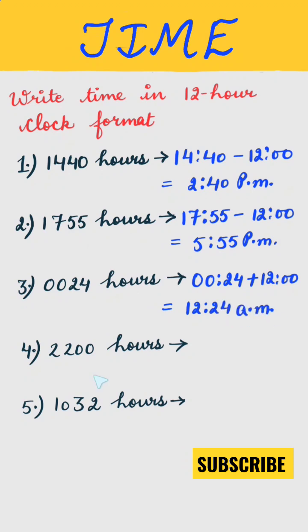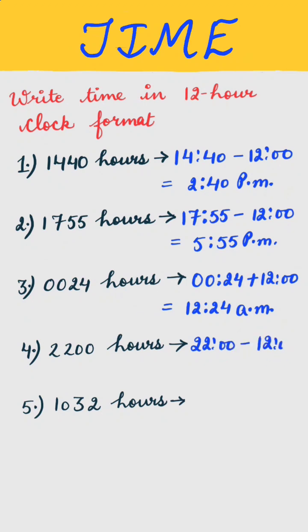Next is 2200 hours. This can be written as 2200 minus 12, which is equal to 10 PM. You can try the next one. Thank you.